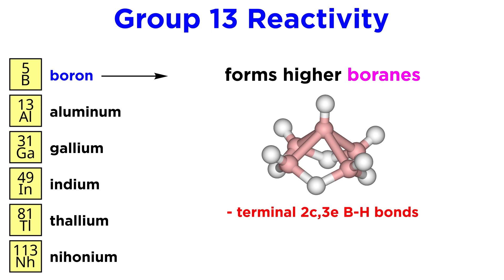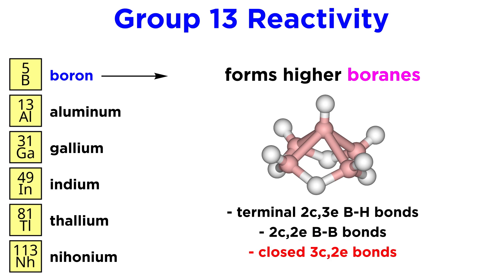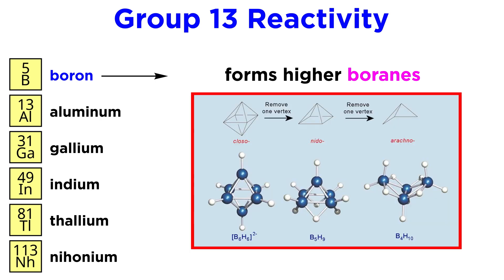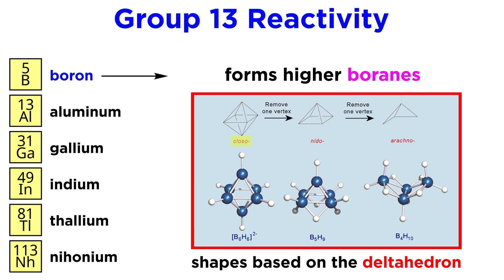Terminal two-center three-electron boron-hydrogen bonds, two-center two-electron boron-boron bonds, closed three-center two-electron boron bonding, and so forth — this is how boron can bond to more atoms than one might expect given its three valence electrons, in order to form a wide range of borane structures. Some of these common cluster structures include closo, with a boron on every corner of a closed deltahedron; nido, which is a deltahedron without one vertex; and arachno, which is a deltahedron without two vertices.